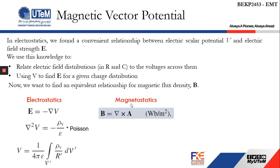If you are given the vector magnetic potential, you can apply curl to it to get the magnetic flux density B.